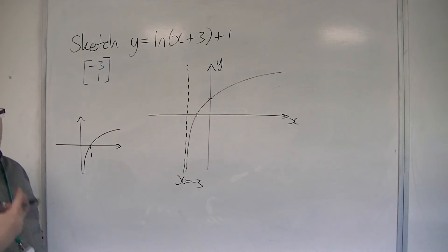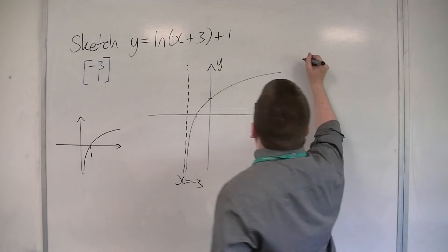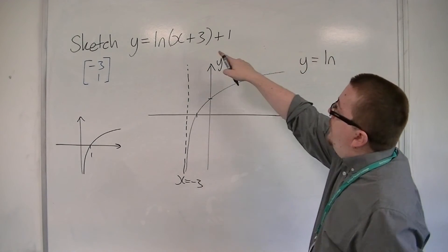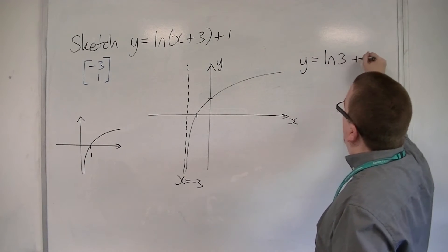Now, where it crosses the y-axis is when x is 0. So when x is 0, y is equal to log of 0 plus 3, so 3 plus 1.